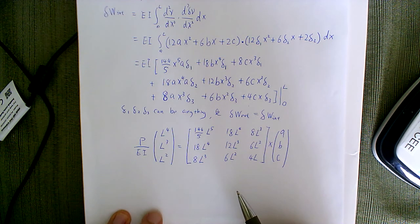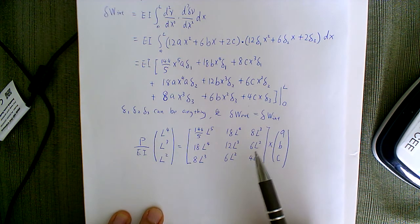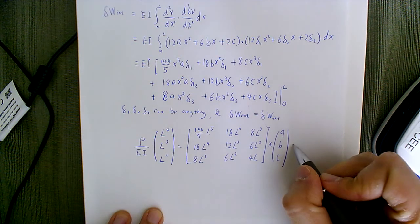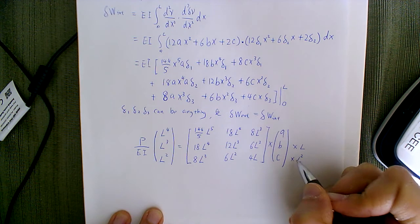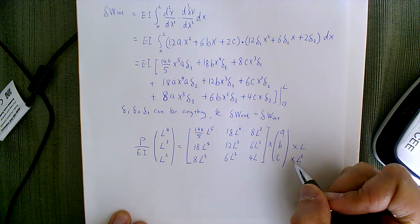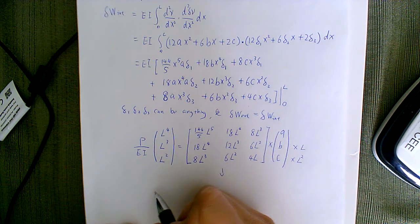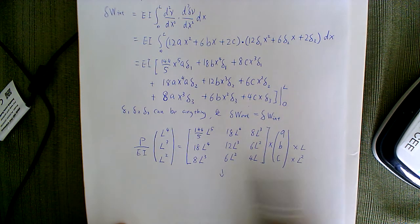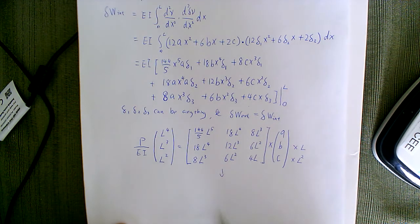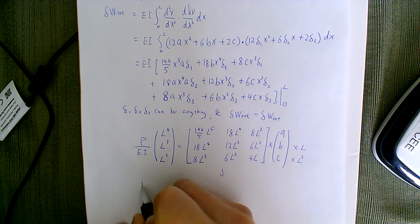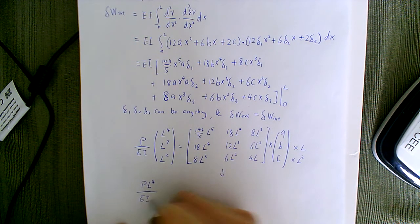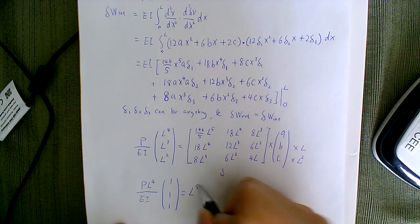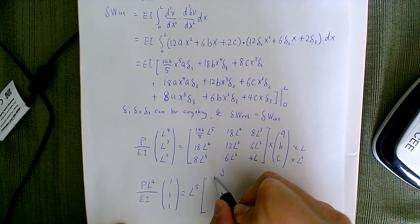Multiplying the second row by l and the third row by l² lets you factor things out nicely. You can pull out l⁴ on the left side and l⁵ on the right, leaving a purely numerical coefficient matrix. This simplification makes the system cleaner to solve — you can factor EI and powers of l out and work with a dimensionless numerical matrix.